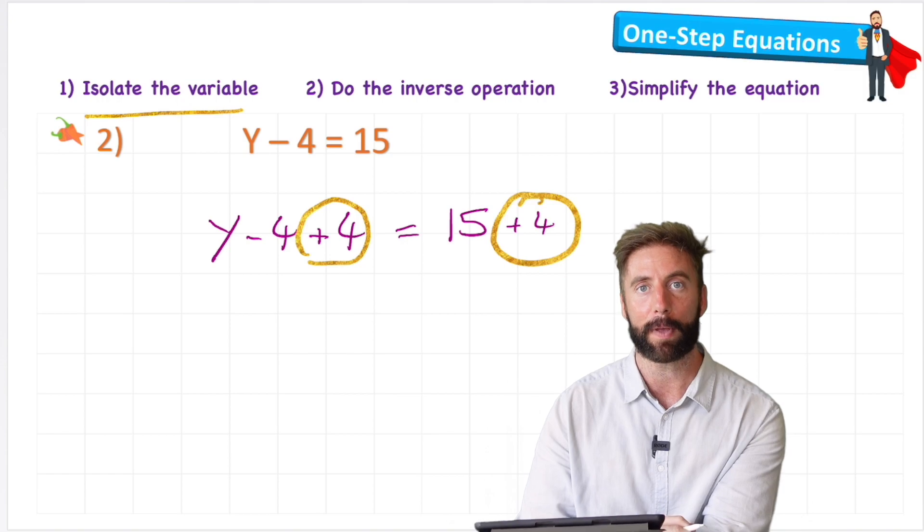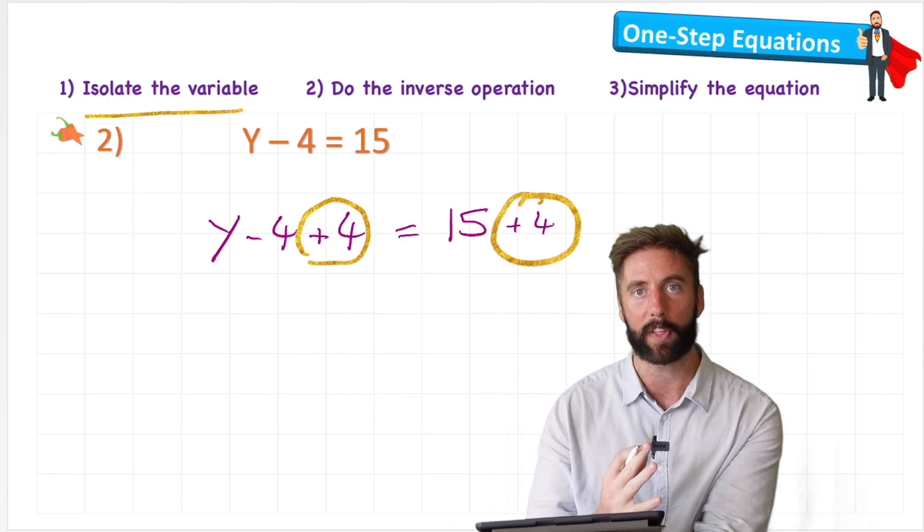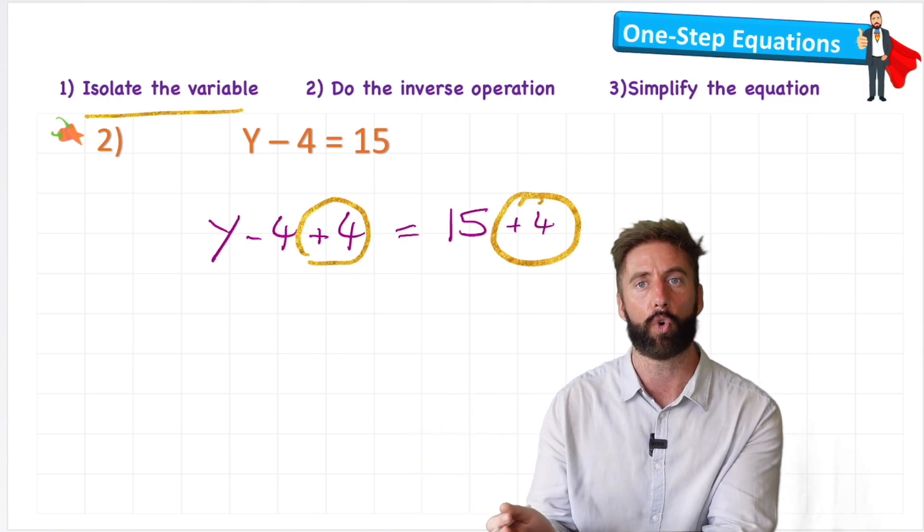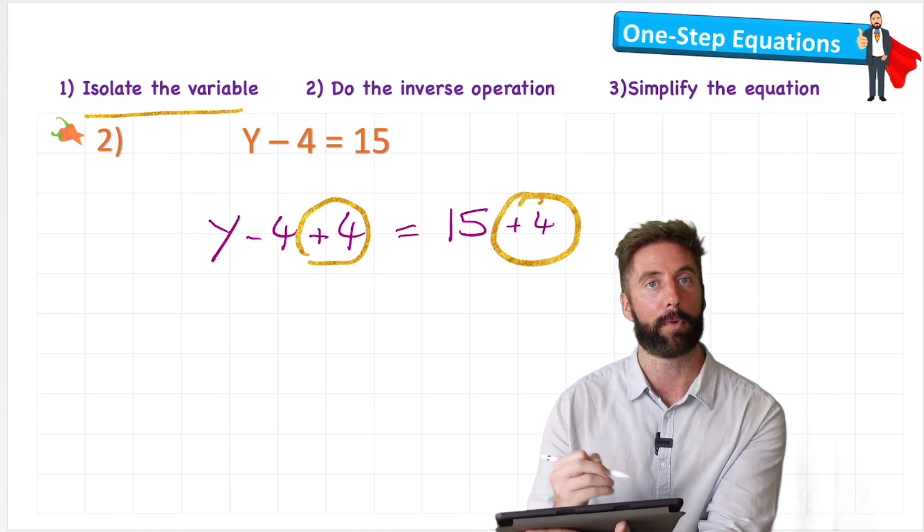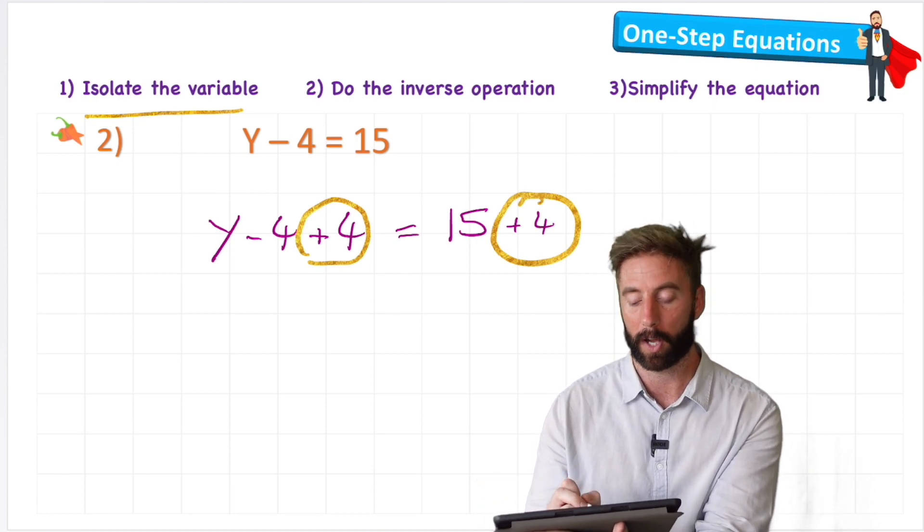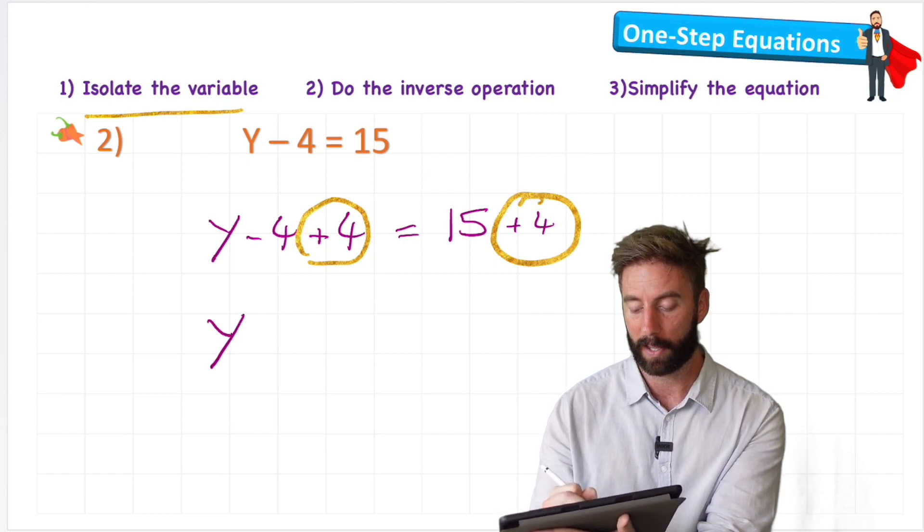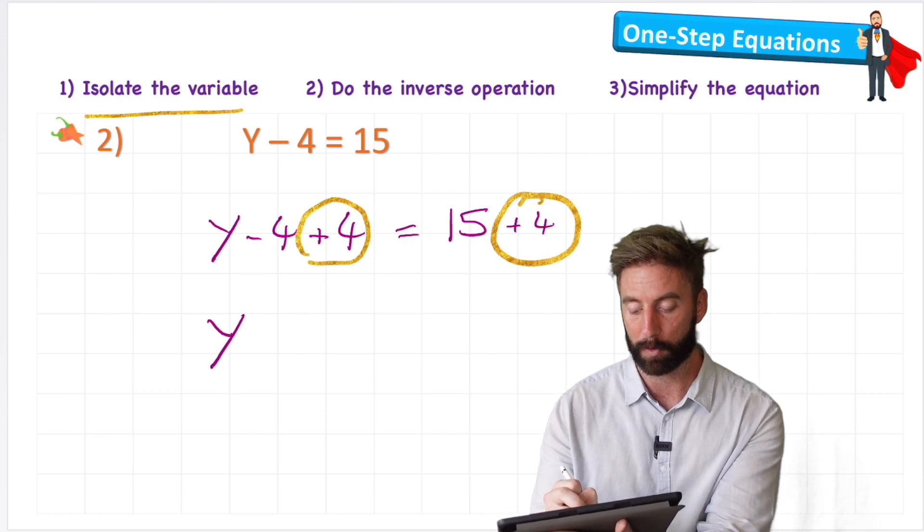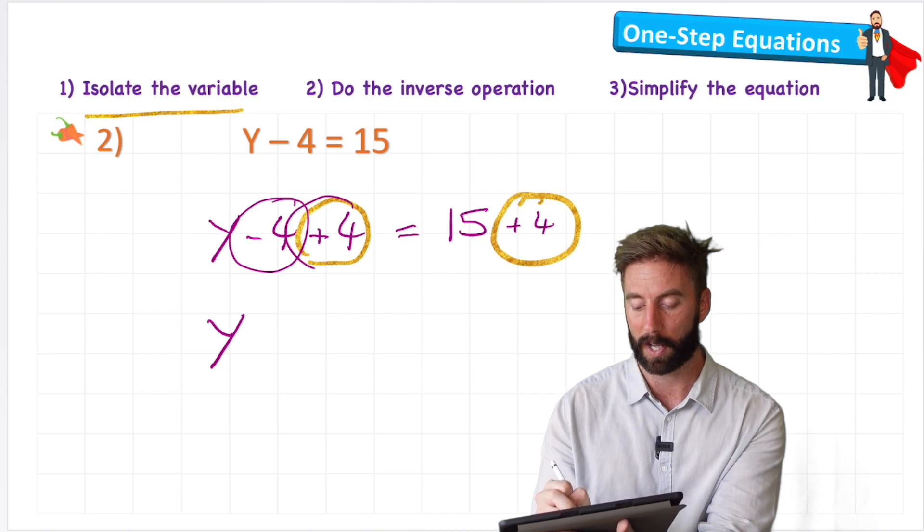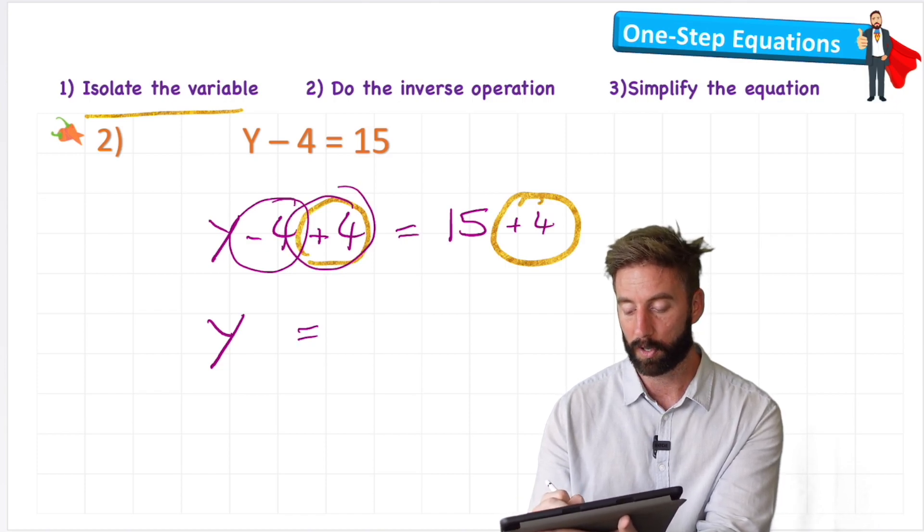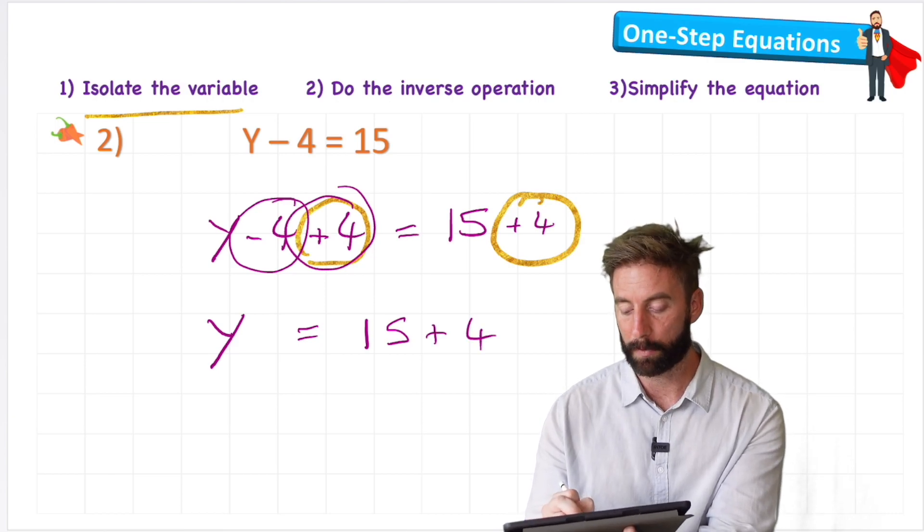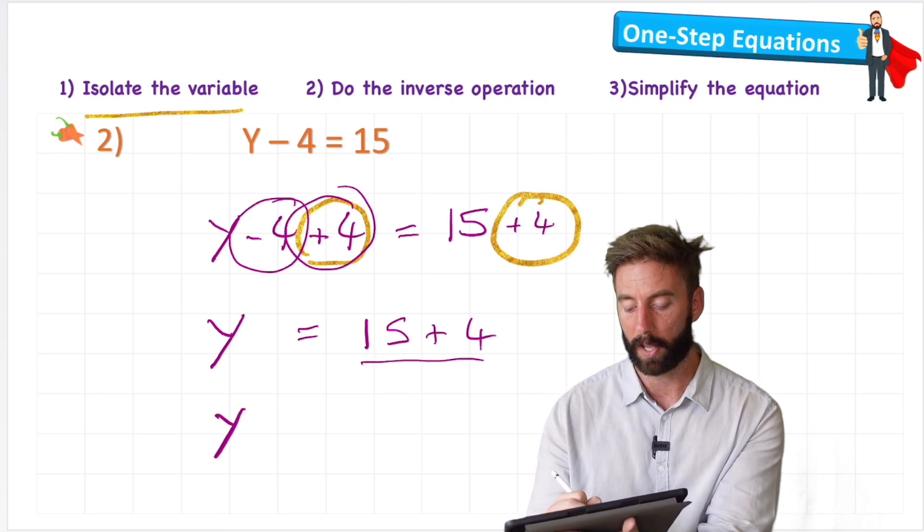That way, I'm keeping my equation balanced. That's all we've got to think about, making sure that our equation is always balanced. Now I can move to step 3, look at simplifying my equation or solving it. And I can have y. I don't need any of my 4s anymore because my negative 4 cancels out my plus 4. So y equals 15 plus 4. I'll solve this part here now and write y equals 19.